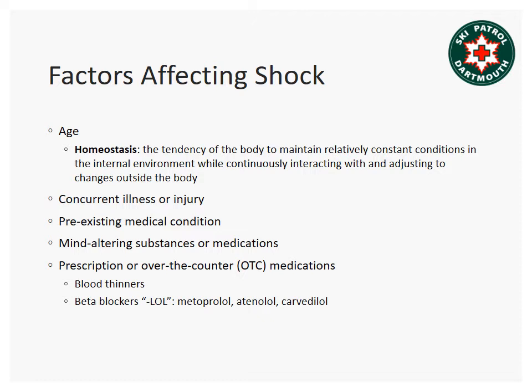With any of the four types of shock, various factors determine how the patient's body is able to compensate. Pediatric patients are able to maintain homeostasis for a much longer period despite increasing blood loss, but then decompensate very quickly. Elderly patients are less able to compensate for blood loss from the beginning and will decompensate sooner. Patients with existing illnesses or other injuries may also have difficulty compensating for shock.